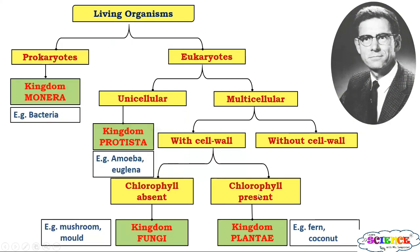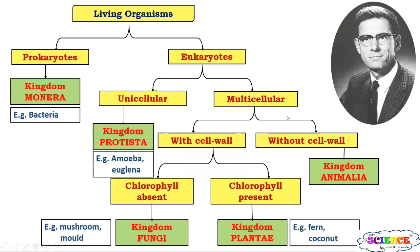The last kingdom is Kingdom Animalia, which includes all organisms that do not have a cell wall. They are multicellular and eukaryotic — that is, they have a well-defined nucleus. All animals, for example cat, dog, human, etc., were placed in Kingdom Animalia.